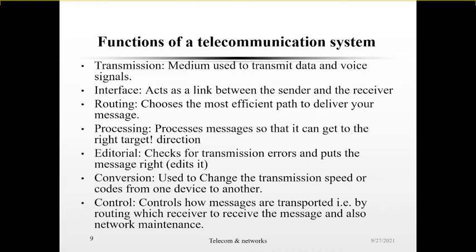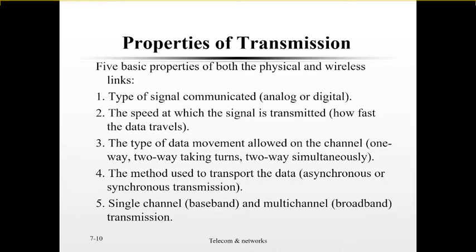Now let us look at the properties of transmission. Basically, we have five properties. The first is the signal type — before you transmit, you should understand whether the signal is in digital format or wave format. The second property is the speed needed for the signal to be transmitted. The third is the data movement type: is your data going to move in one direction, or one direction at a time, or simultaneously? The channel data movement type can also be understood as duplexing — half duplex or simultaneous.